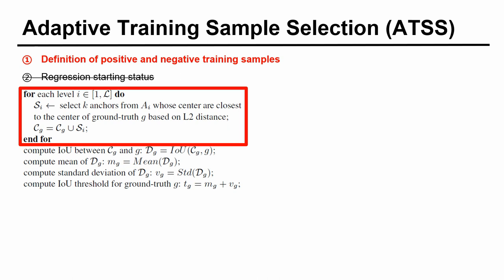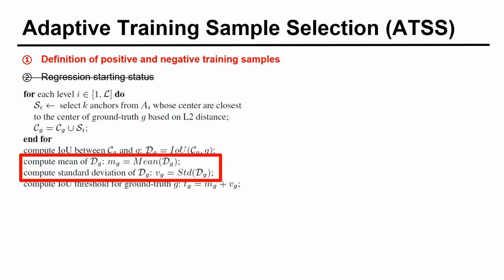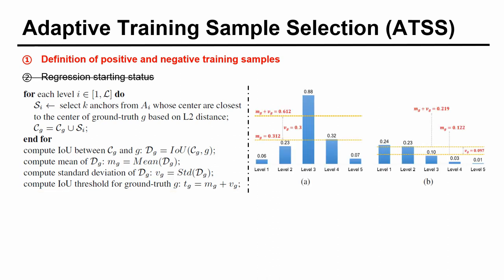If there are 5 feature pyramid levels, this object will have 45 candidates. Then we compute the IOU between these candidates and this object, as well as its mean and STD. With this statistic, the IOU threshold for this object is the sum of mean and STD. And we select these candidates whose IOU are greater than their thresholds as final positive samples.